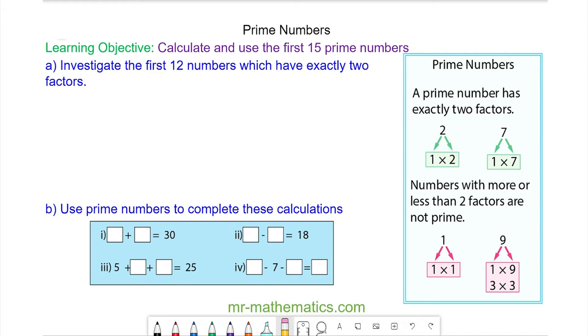Hello and welcome to our lesson on prime numbers. We're going to investigate the first 12 numbers which have exactly two factors, and if a number has two factors, this is a prime number.